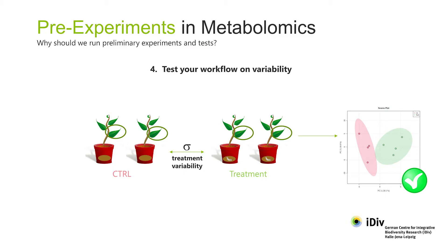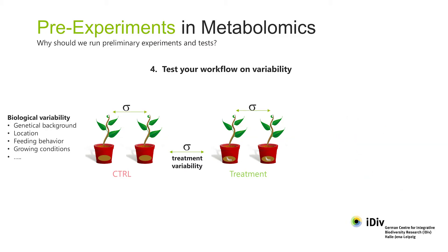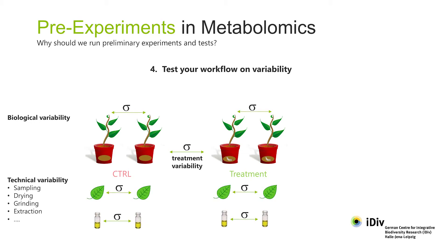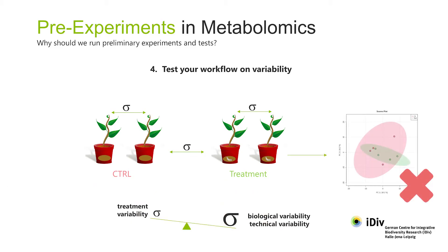Variability in the process may well increase troublesome variance. There are several factors that cause variability in metabolomic data. There's biological variability, which arises from the genetic background of the plant, from its location and the growing conditions, and from the feeding behaviour of the larvae. There's also technical variability, which arises from the work process itself due to inconsistent sampling or varying conditions of drying, grinding, and sample extraction. If biological and technical variability are not properly handled, they might combine to obscure any effect of treatment, or create a false effect of treatment if the variability differs between treatments. Preliminary experiments help identify the factors causing biological and technical variability.